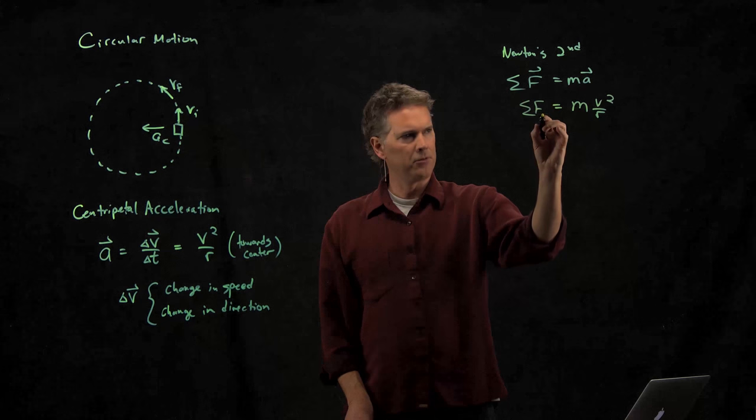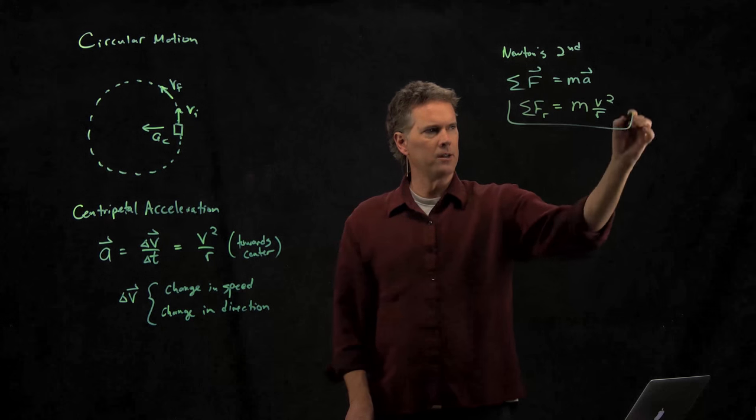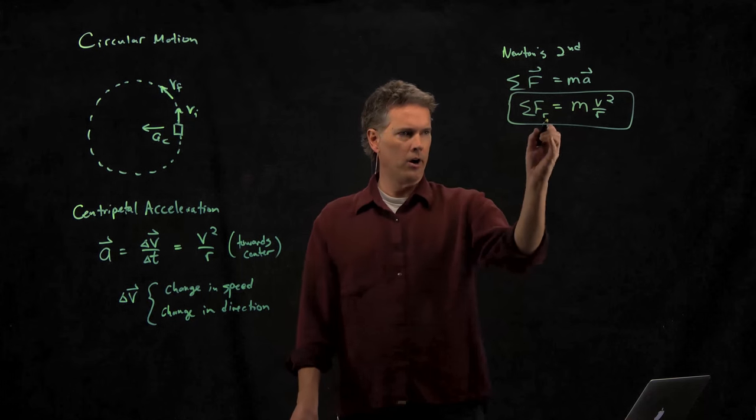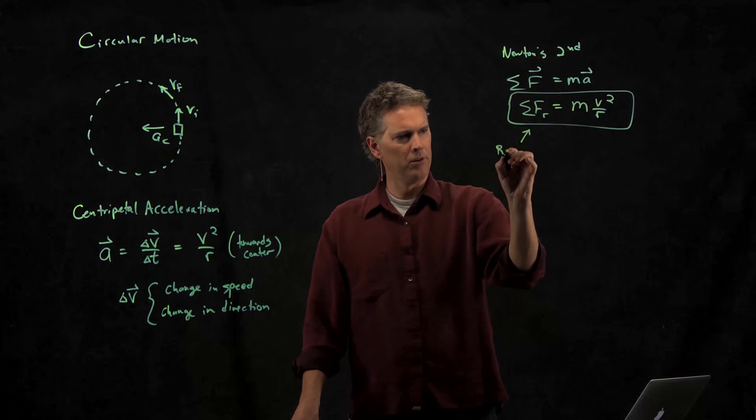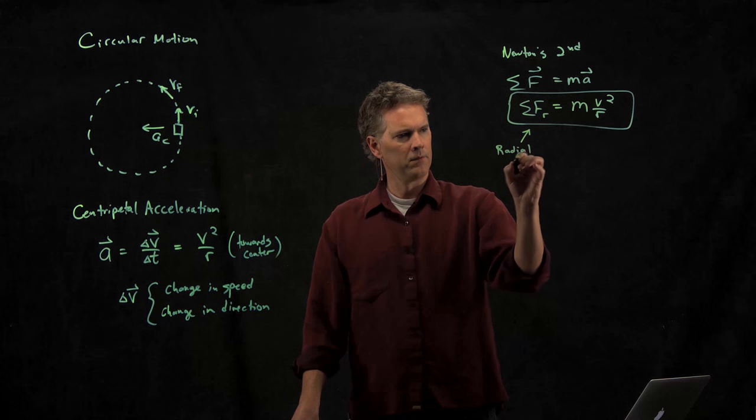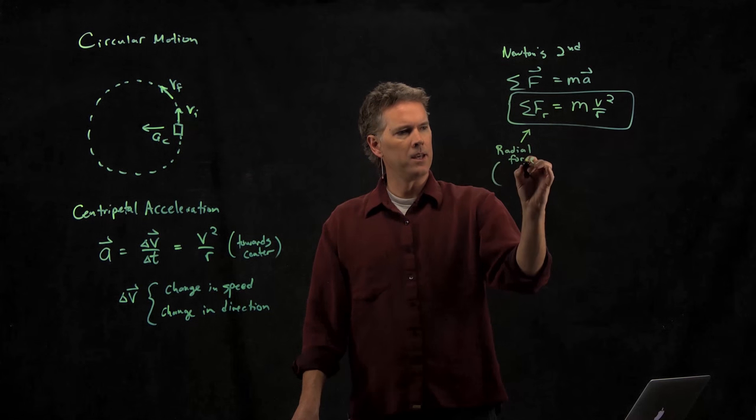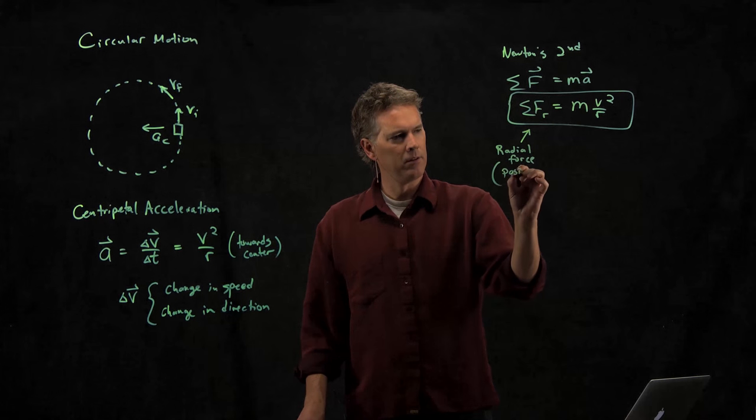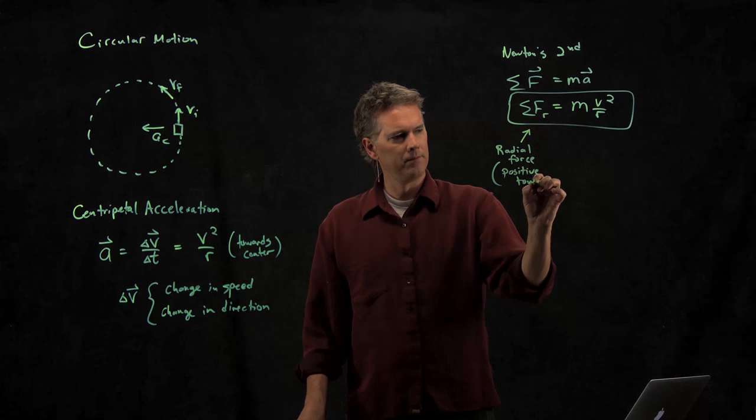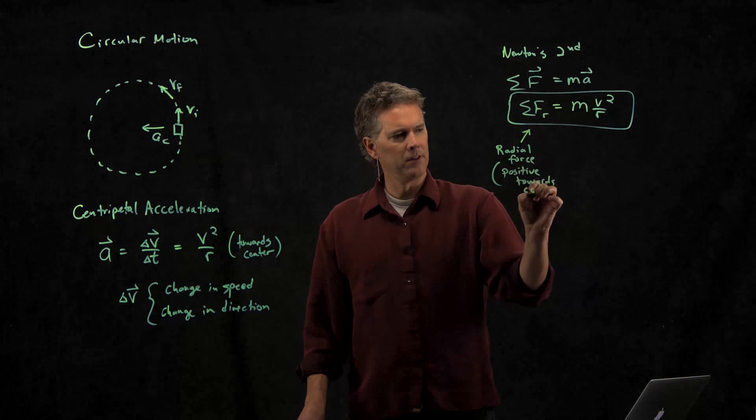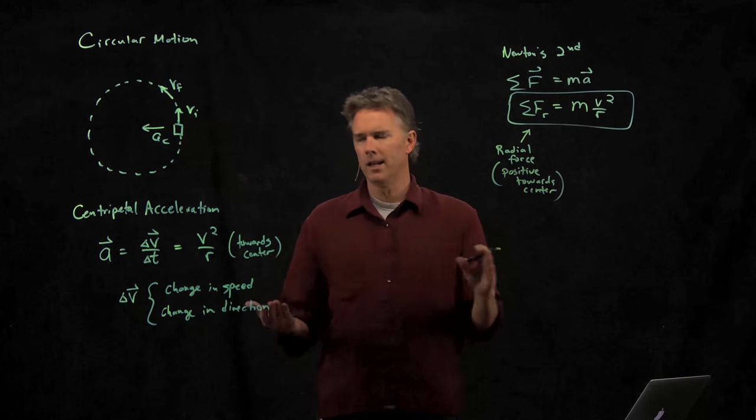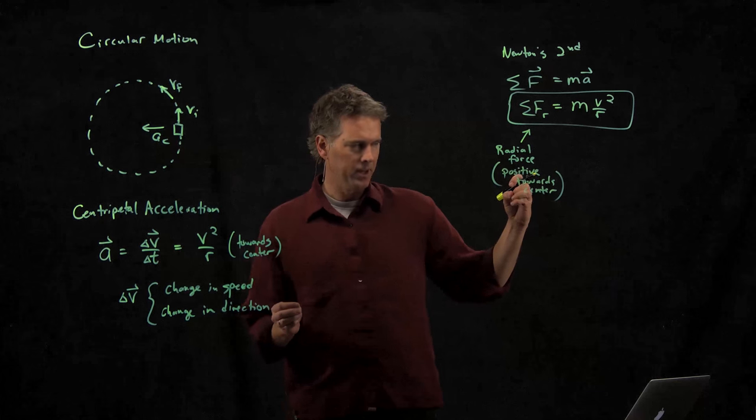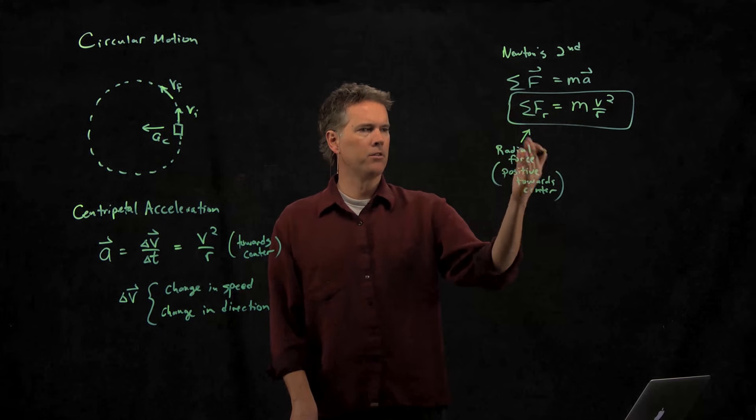That is mv squared over r. And the way we write it with a subscript is with an r right there. What we mean by this r is radial force, and the sign convention is positive towards the center.